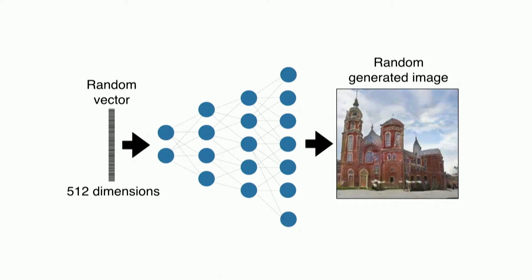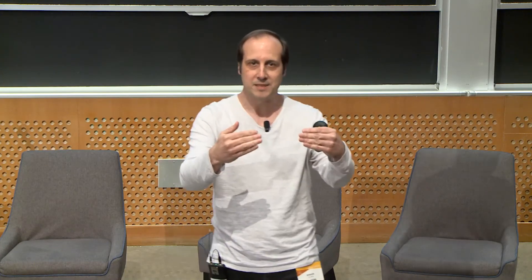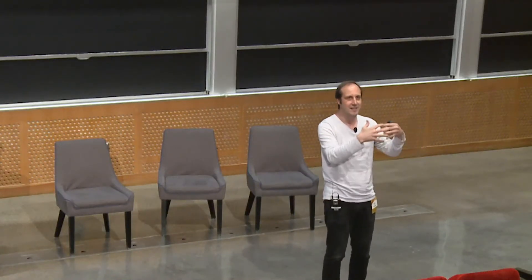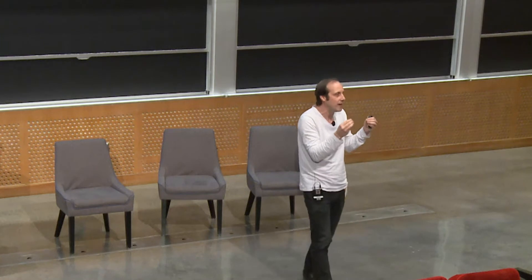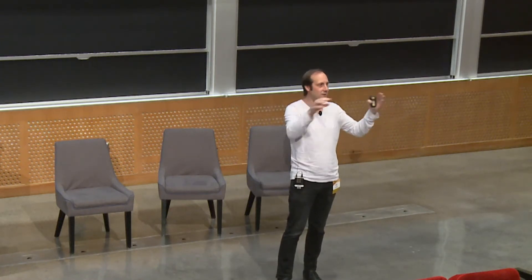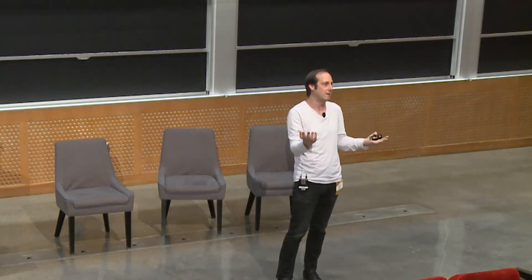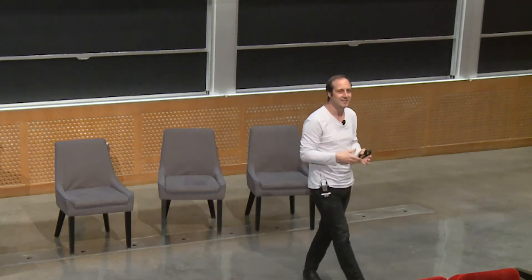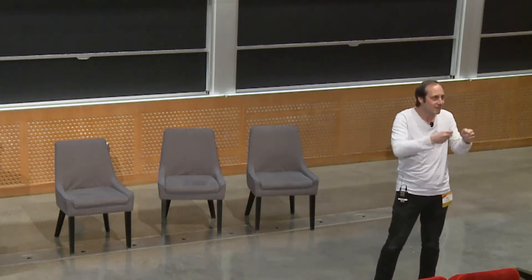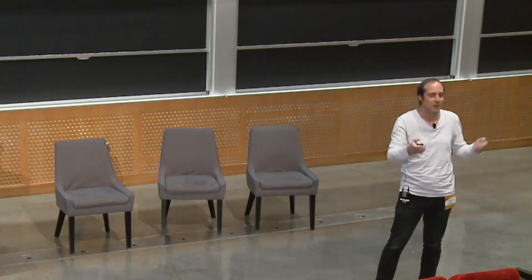Think of flipping a coin 500 times and recording the ones and zeros. What you want to do is recombine those numbers in many different steps — recombine them, making some nonlinearity, some operations between them, recombining again — expanding that vector from 500 dimensions into something bigger and bigger until you can put it on a square layout and it looks like a picture. It's pretty amazing that these systems achieve something that looks like an image just by doing these combinations of a random set of numbers.